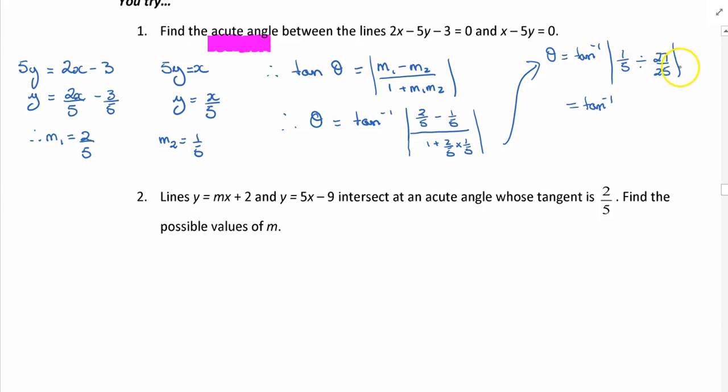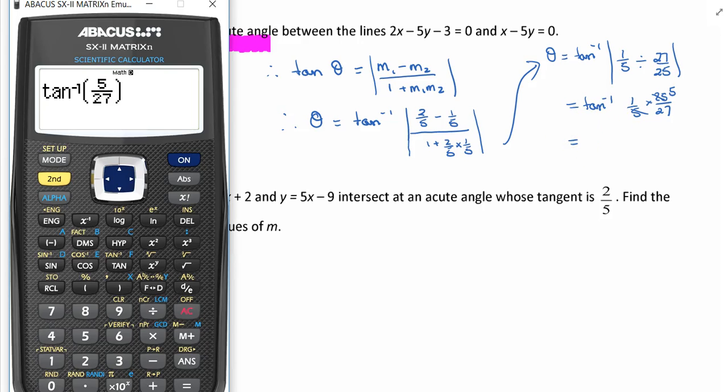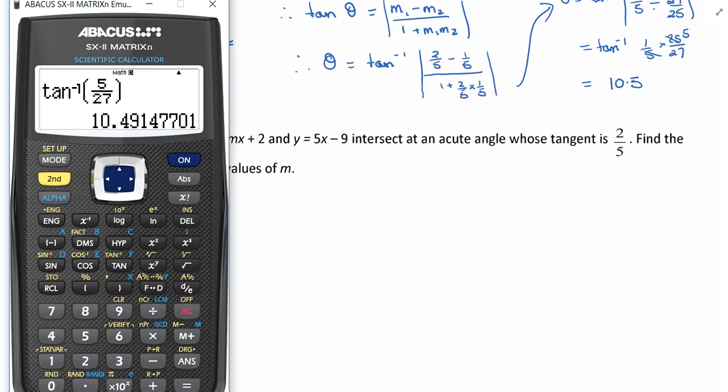So 1 + 2/25 which is 27/25. The absolute value is not going to really apply anymore because this is going to be positive. 1/5 × 25/27, so we want the tan inverse of 5/27, which you can see I've got on the calculator there: tan inverse 5/27 which equals 10.49.